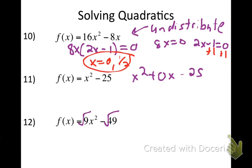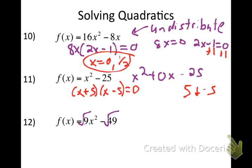Number 11 is that difference of squares. Two numbers multiply to get negative 25 and add to get zero: 5 and negative 5. I factor it: (x+5)(x-5) equals zero. My two answers are x equals negative 5 and x equals 5.